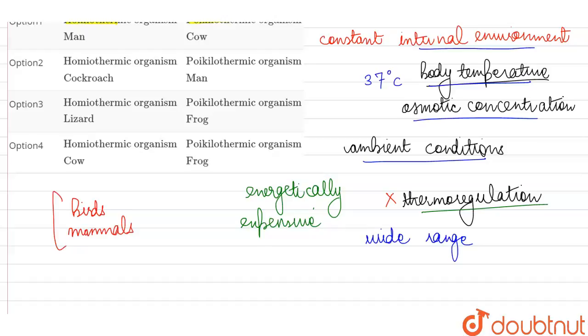So, these are known as the homeothermic organisms or the warm-blooded animals because they have the ability of thermoregulation and they maintain constant body temperature.